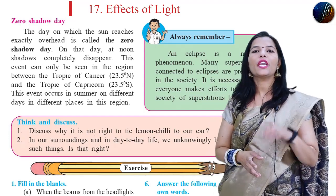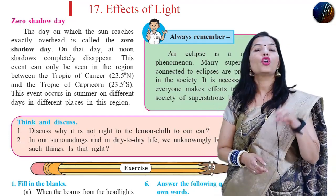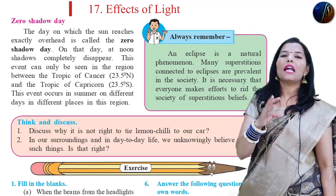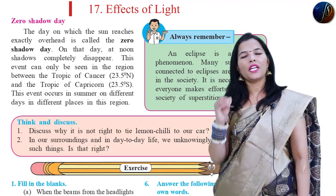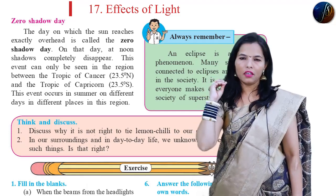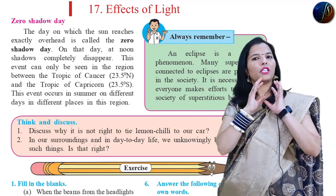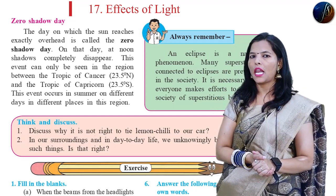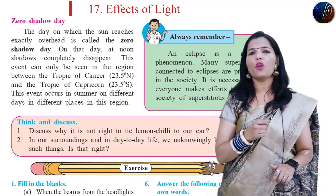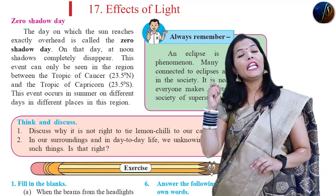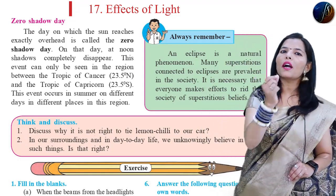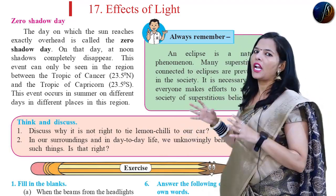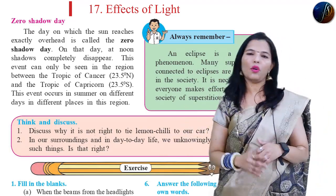It is a special event. We can see this event on the Tropic of Cancer at 23.5 degrees north, and the Tropic of Capricorn at 23.5 degrees south. It means 23.5 degrees north is the Tropic of Cancer and 23.5 degrees south is the Tropic of Capricorn. So we can observe Zero Shadow Day at these locations.